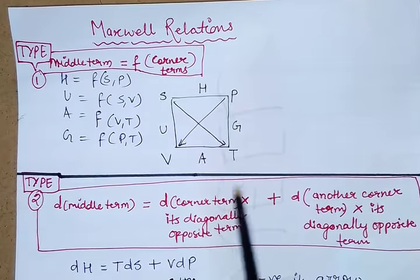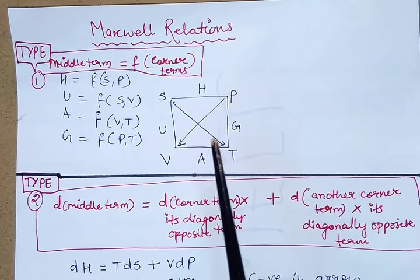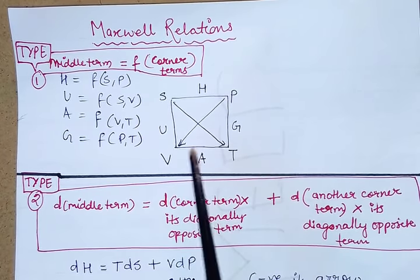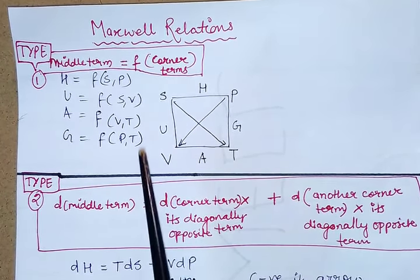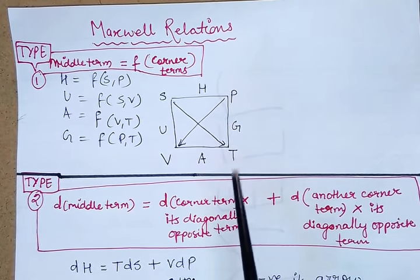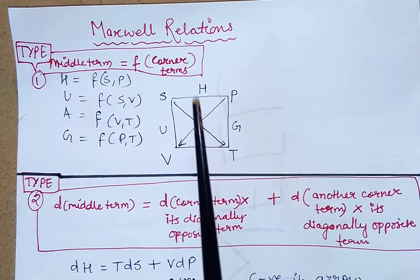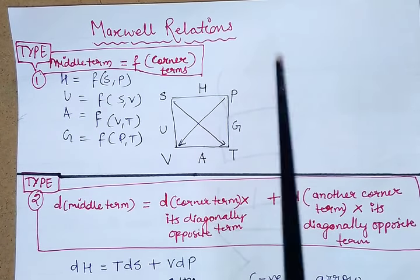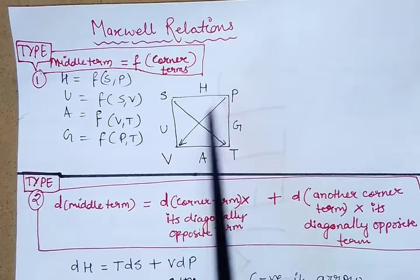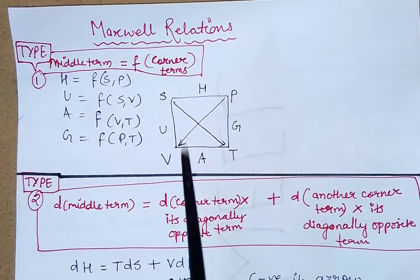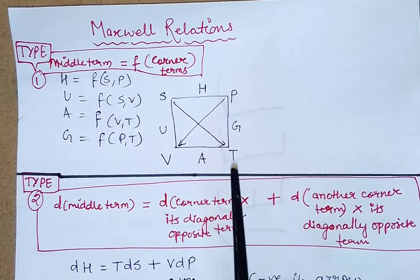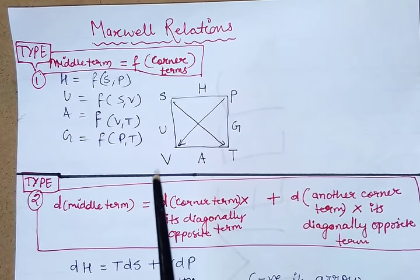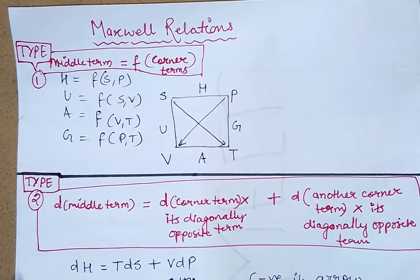First of all, you will have to remember this diagram. Wherever you need the Maxwell Relations, first draw this in rough. This is a square that has entropy, pressure, temperature, volume, enthalpy, Gibbs energy, work function, and internal energy as the labels on it, and two down arrows which are heading towards volume and one towards temperature in this diagram. From this diagram, we are going to derive all four different categories of Maxwell Relations.